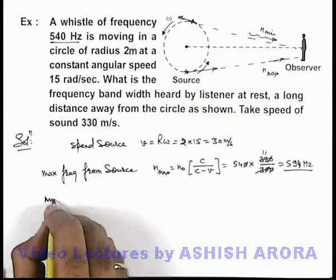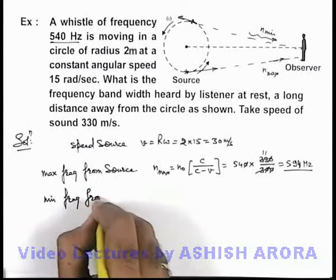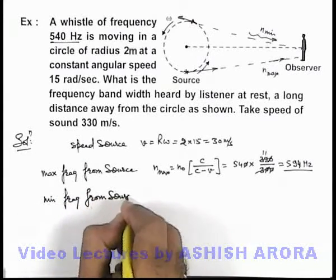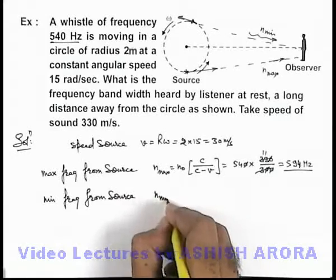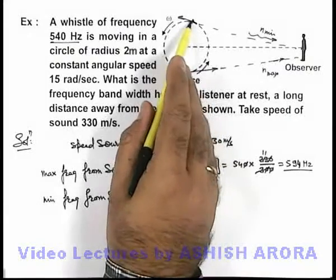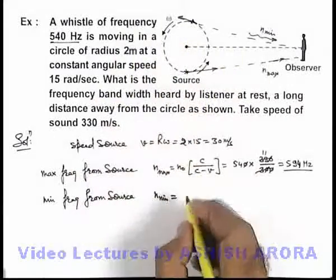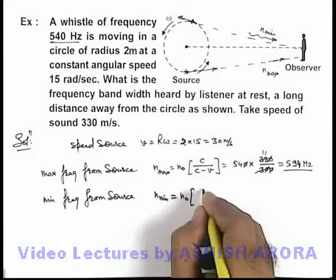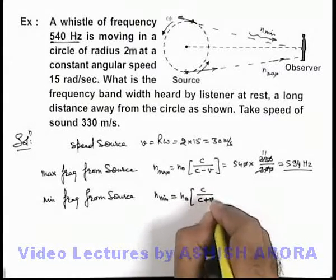Similarly, we can find out the minimum frequency from source. This minimum frequency will correspond to the position where the source is moving away from the observer, so it'll be n₀ × c/(c + v).